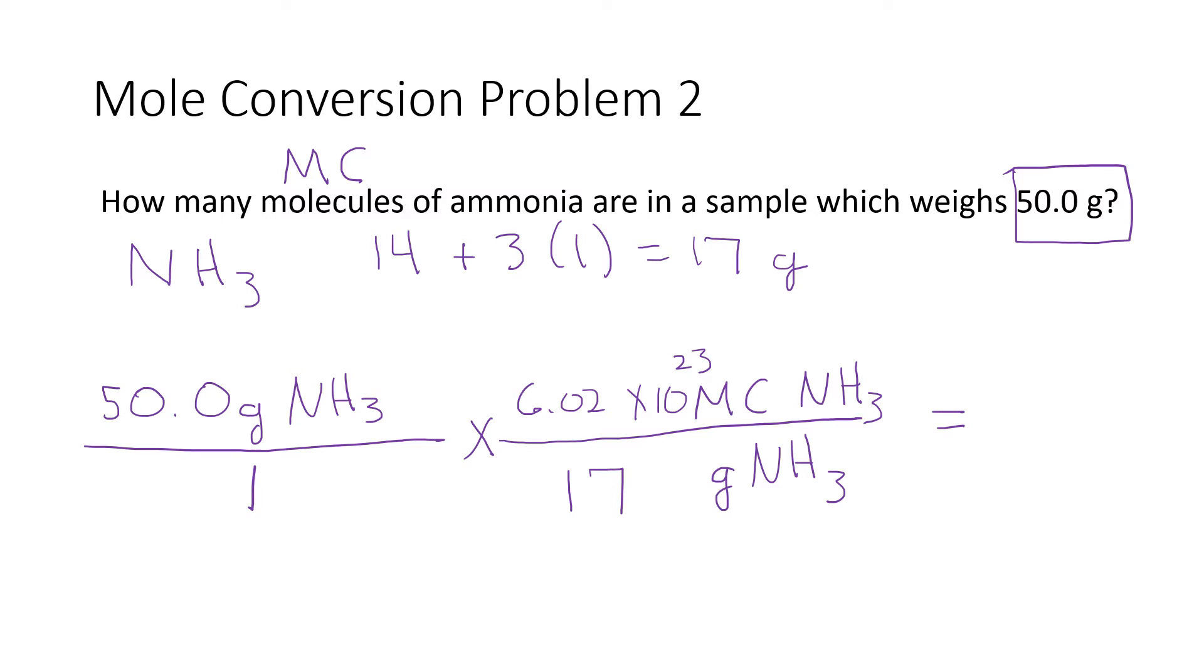If I look at my units here, I started with grams of ammonia and I have grams of ammonia on the bottom of the next step, so they cancel out. So whatever number I calculate here will have units of molecules of ammonia. I'm just going to go left to right: I've got 50 times 6.02 e23 divided by 17, and that gives me 1.77 times 10 to the 24th. The units on this are molecules of ammonia.